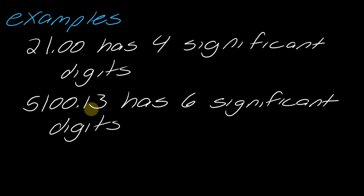This number 5100.13 - the zeros in between are considered significant digits. So one, two, three, four, five, six - this would be six significant digits.